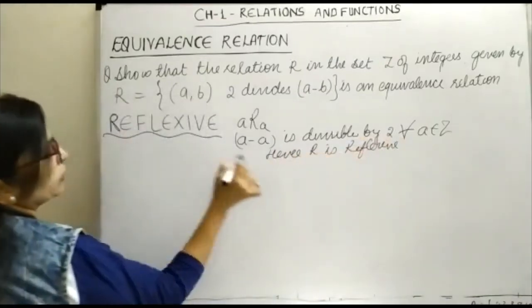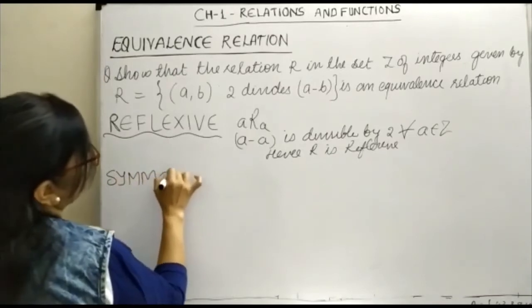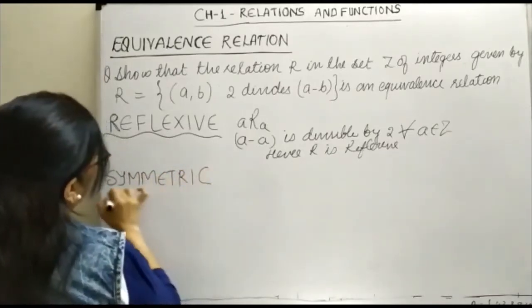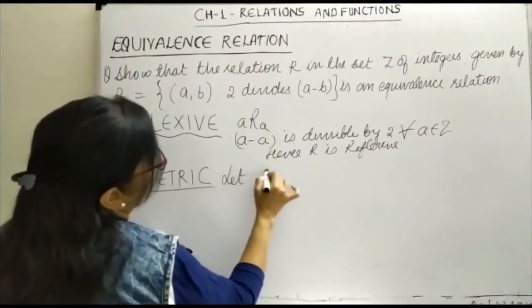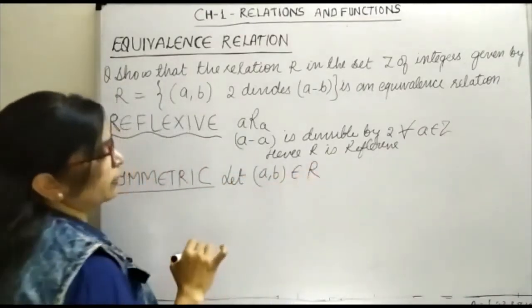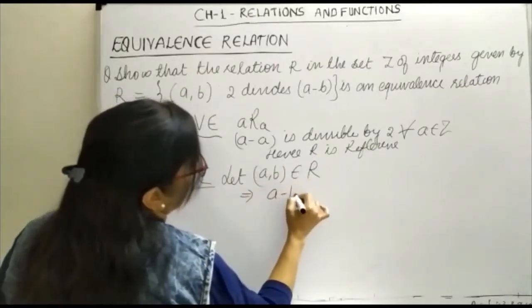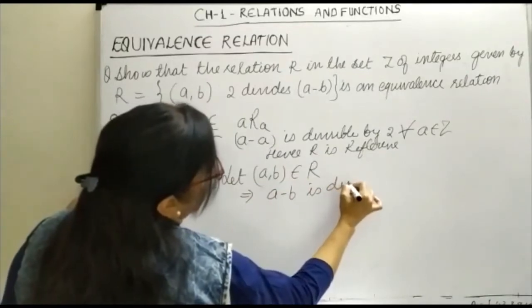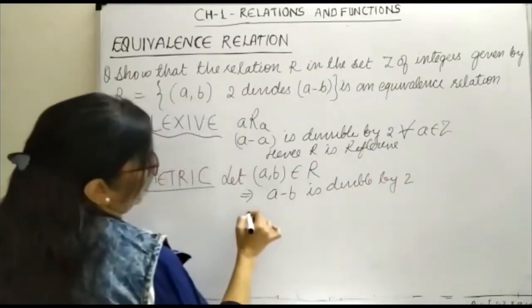Now moving on to the next is symmetric. In symmetric property we take any element. Let (a,b) belongs to R. If (a,b) belongs to R, this implies A minus B is divisible by 2.